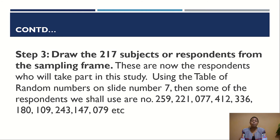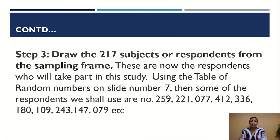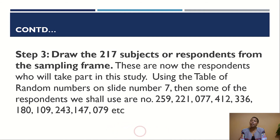These are now the respondents who will take part in this study. Using the table of random numbers on slide 7, some of the respondents we shall use are numbers 259, 221, 77, 412, 336, 180, 109, 243, 147, 79, etc. The table of random numbers has allowed us to select 217 respondents. Since we have listed our sampling frame, the person who is number 259 becomes part of the sample, the person who is number 221 becomes part of the sample, and so on, as shown on slide 7.